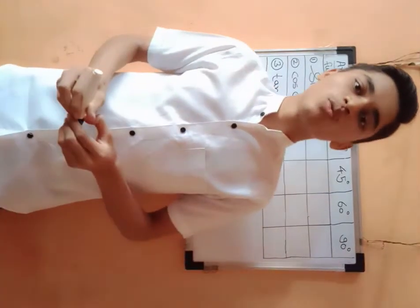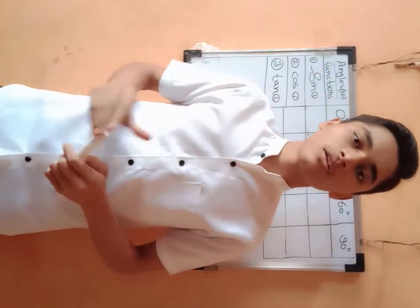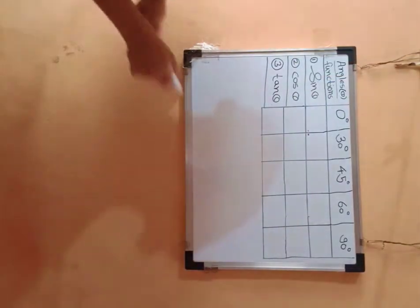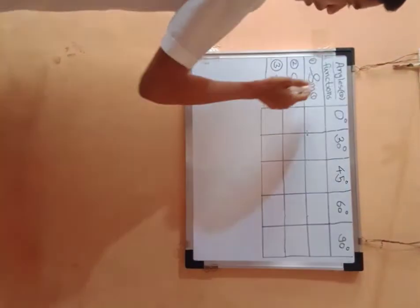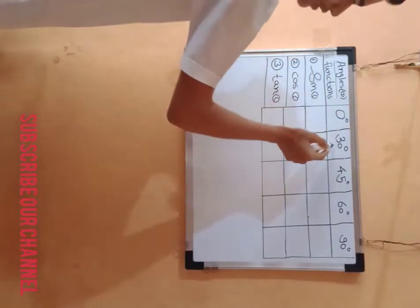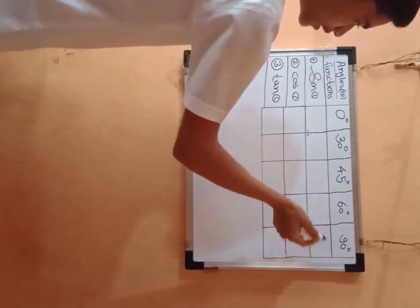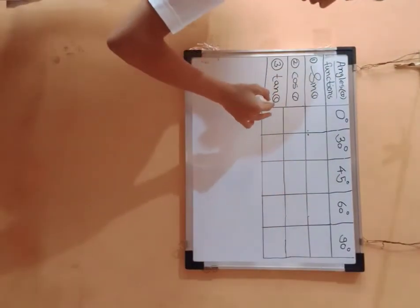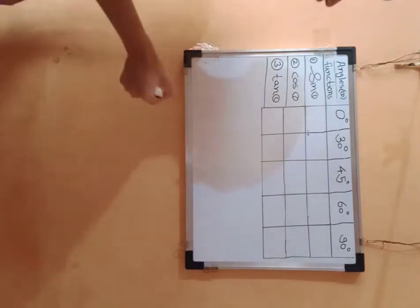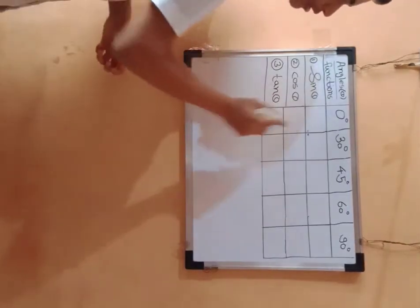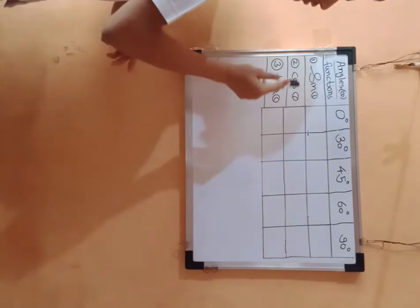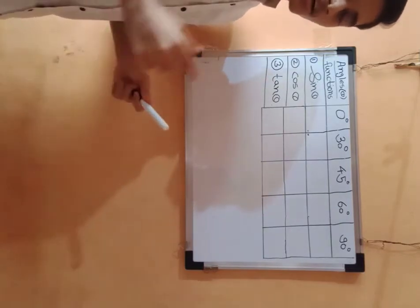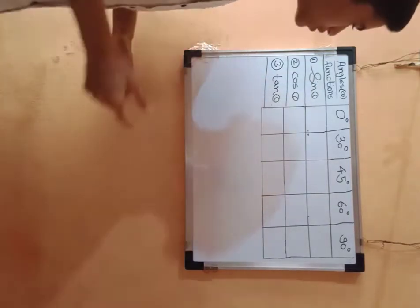Hello guys, in this video we will discuss all the trigonometry functions. We will define all the trigonometry functions for the angles 0°, 30°, 45°, 60°, and 90°. The functions are sin θ, cos θ, and tan θ. We will calculate all the values and I will give some techniques and tricks in this video. So let's start.